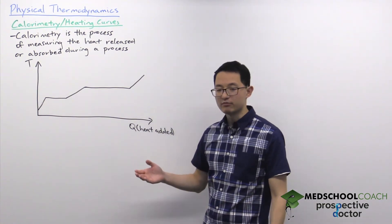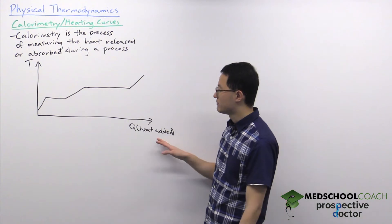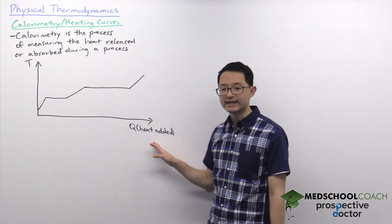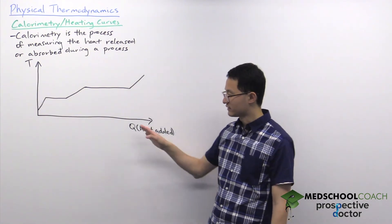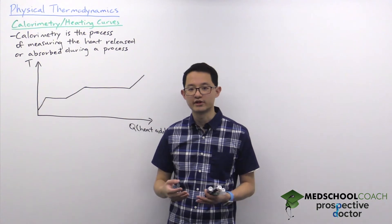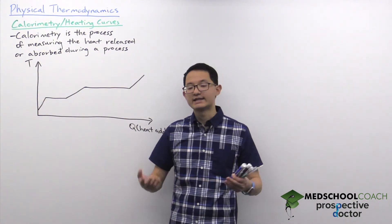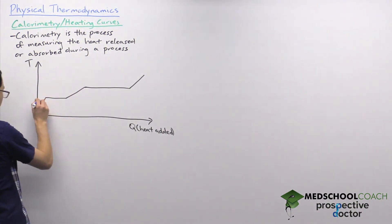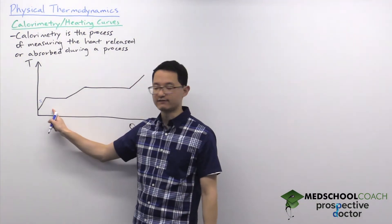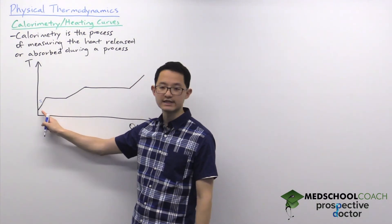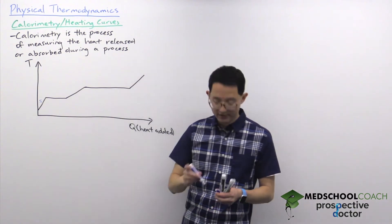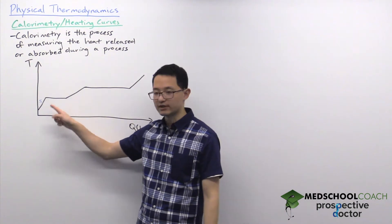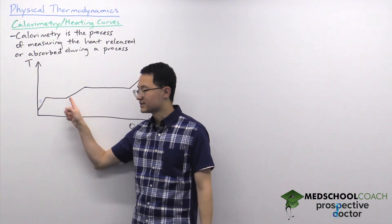Now to understand how much heat is released we need to understand heating curves, which is essentially looking at how the temperature of a substance changes as heat is added. In this case we're going to consider a situation where we're starting off with a solid at a low temperature, like ice at negative 50 degrees Celsius. At the beginning of the heating curve, as we start to add heat, our ice at negative 50 degrees Celsius is increasing in temperature. It goes from negative 50 to negative 40, negative 30, and its temperature increases until at some point it reaches a plateau.